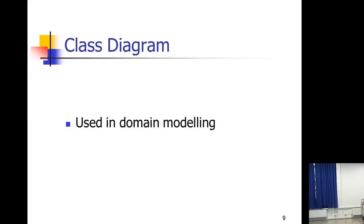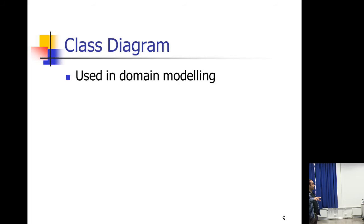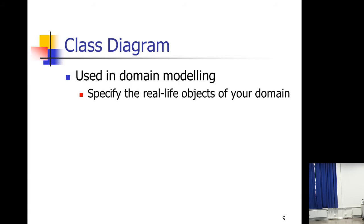Someone mentioned class diagrams taught last year as part of the Database and UML Modeling module. The class diagram can be used in mainly two different ways. One is domain modeling — capturing the names and attributes of different classes and the relationships between them — specifying real-life concepts and objects within your domain. For example, for a Kingston area app, you'd model real-world objects like shops and customers.